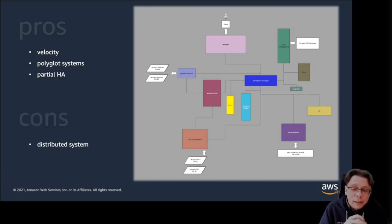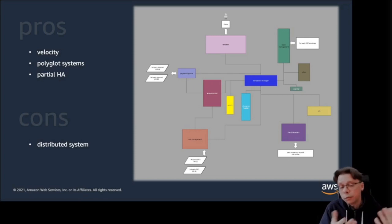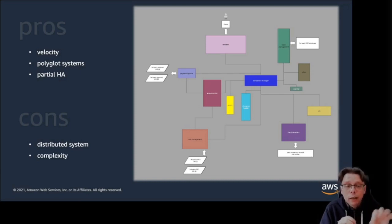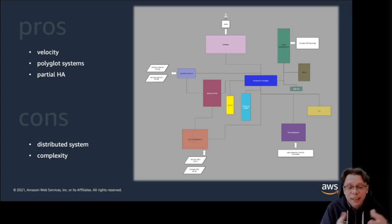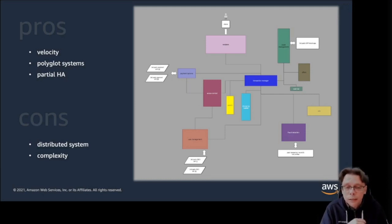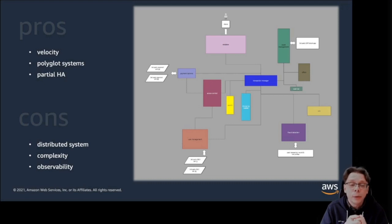Now, what are the cons? It is a distributed system, and very likely those different microservices end up on different nodes — think of Kubernetes, where each microservice might be a deployment with pods ending up on different nodes, using networking to talk to each other. It is much more complex than a monolith. One of the biggest challenges in this context is the observability of the overall system, and that is equally true for developers and for operations folks.